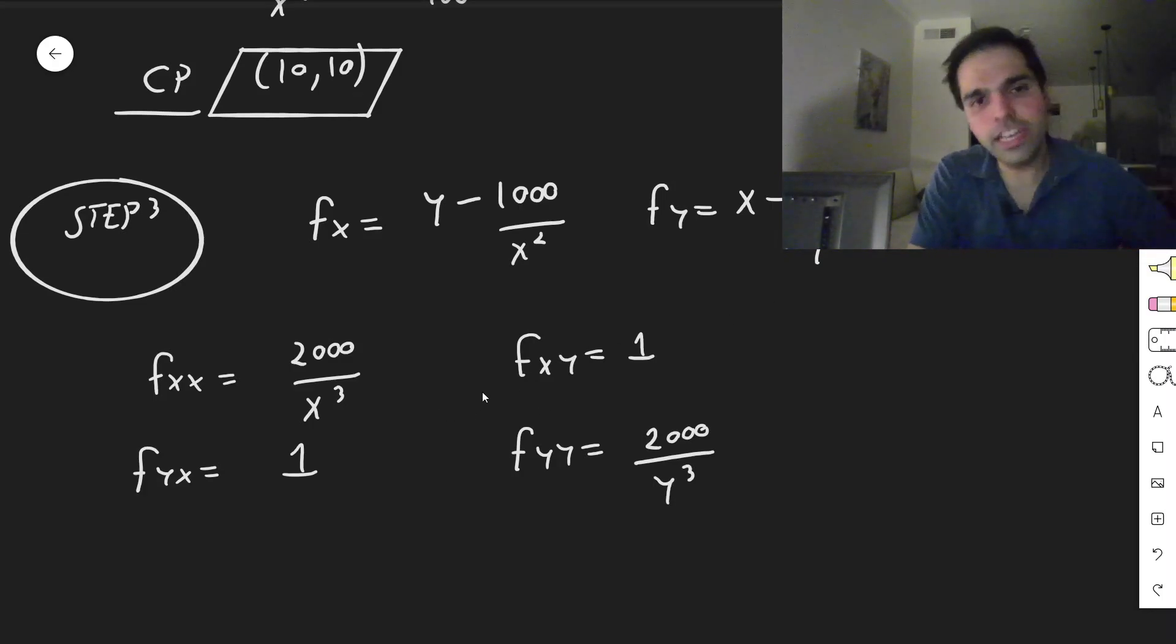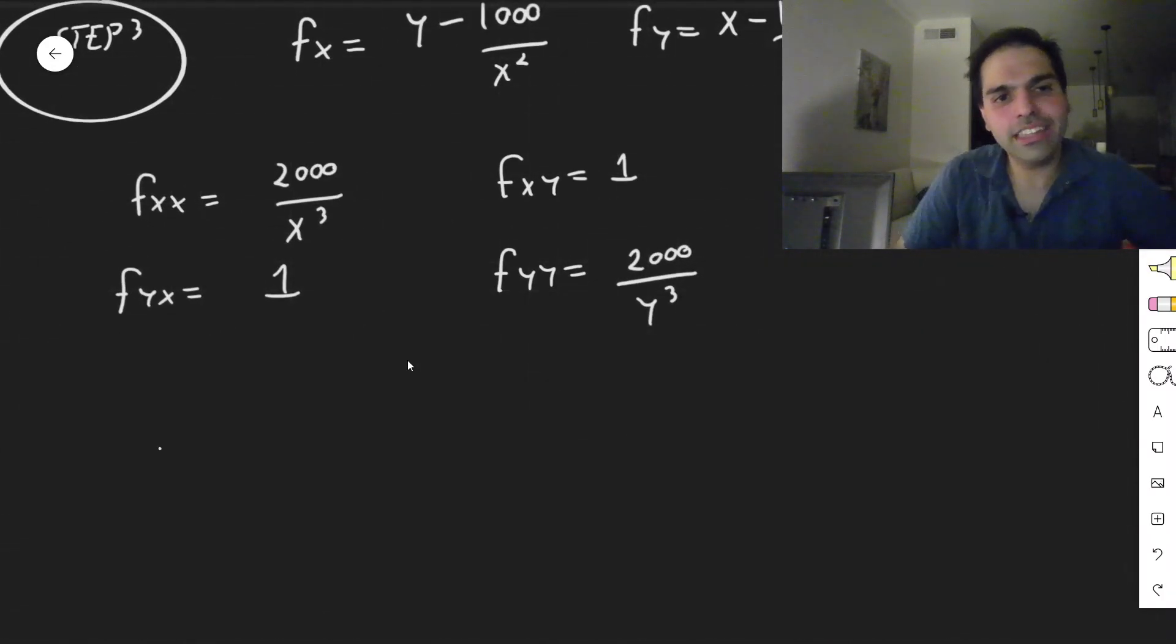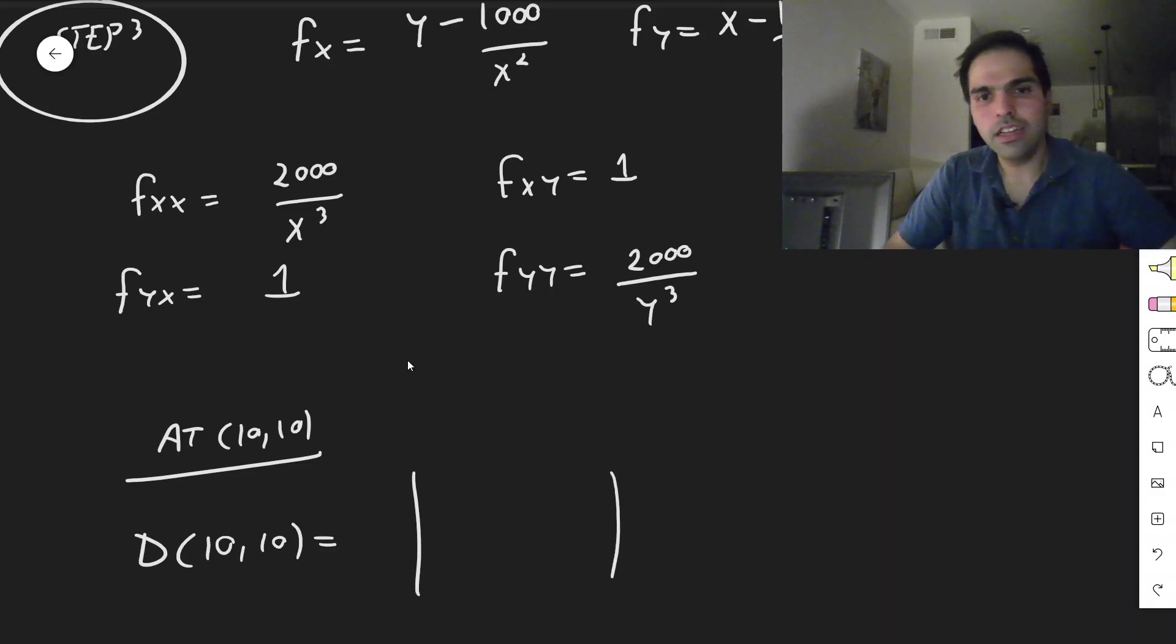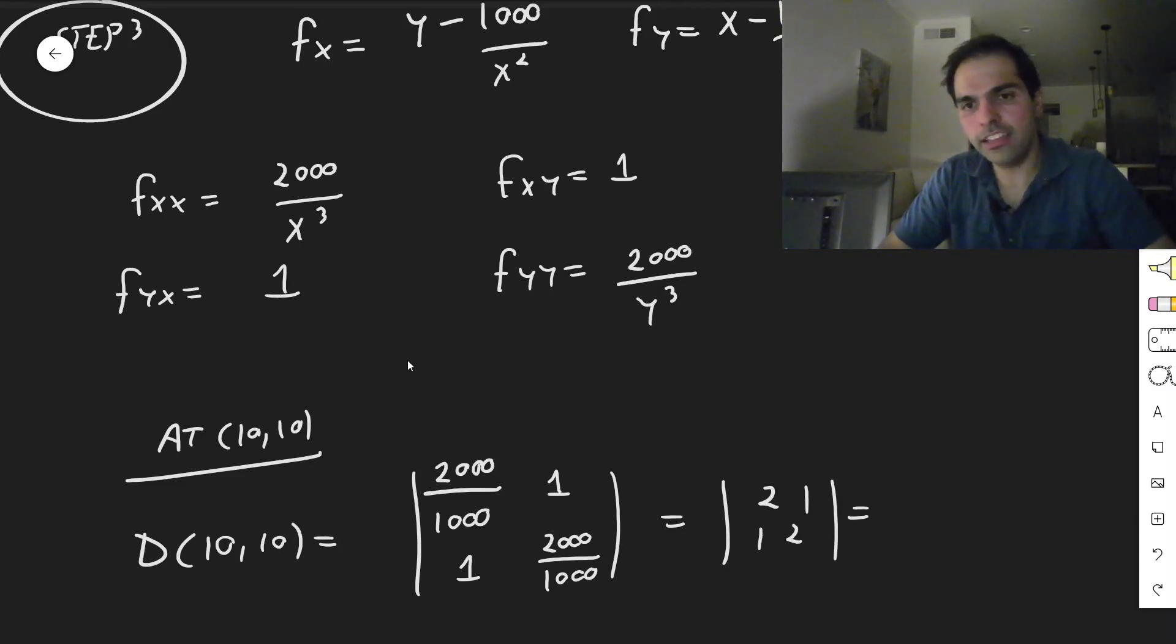All right. And then what you have to do, you just need to do it at the critical point. So at 10, 10, you have to evaluate this determinant, which is simply fxx, fxy, fyx, fyy, but at the point 10, 10. So 2,000 over 10 cubed, which is 2. 1, 1, 2,000 over 1,000, which becomes 2, 1, 1, 2. But now the determinant is 4 minus 1, which is 3, which is positive.